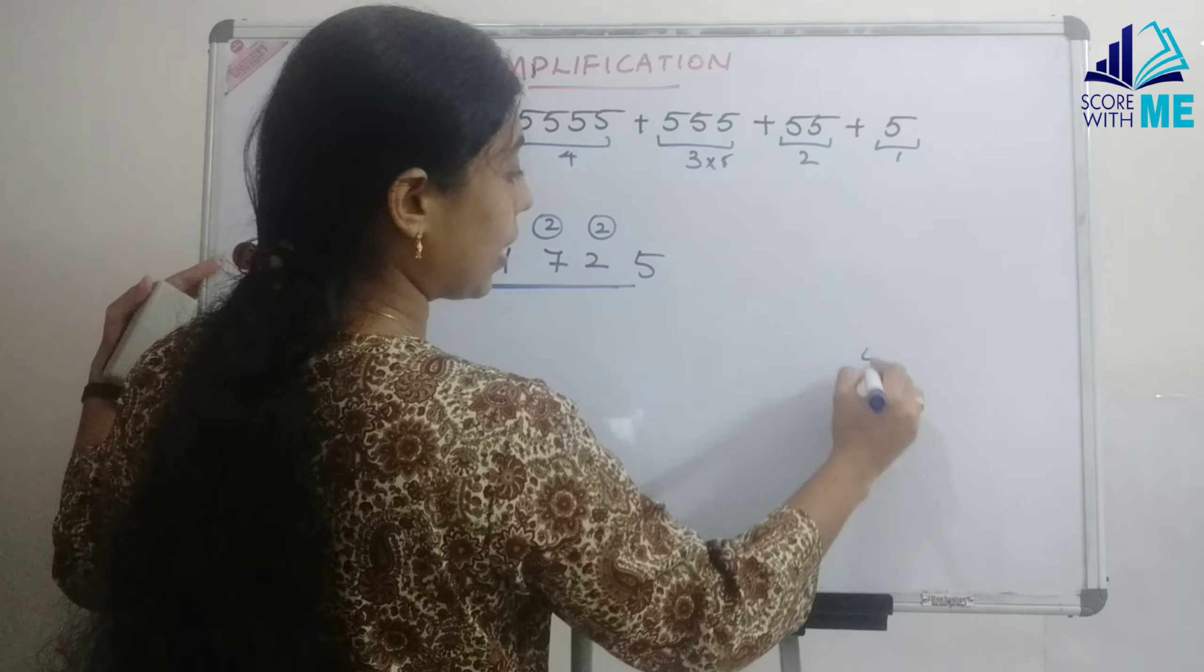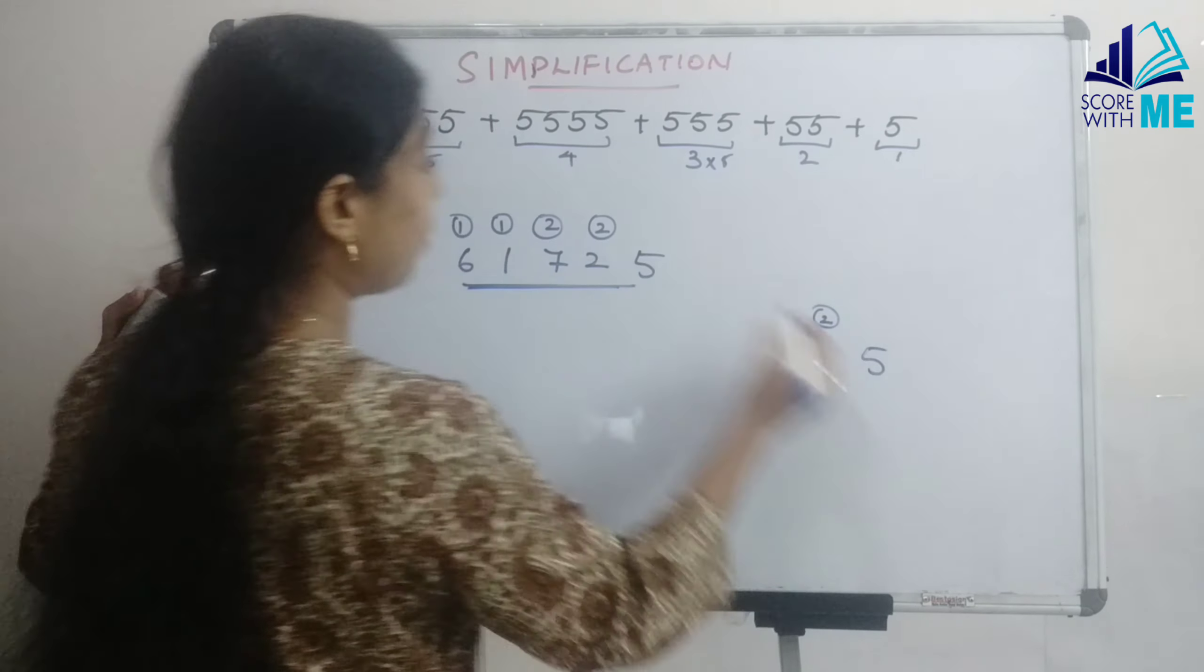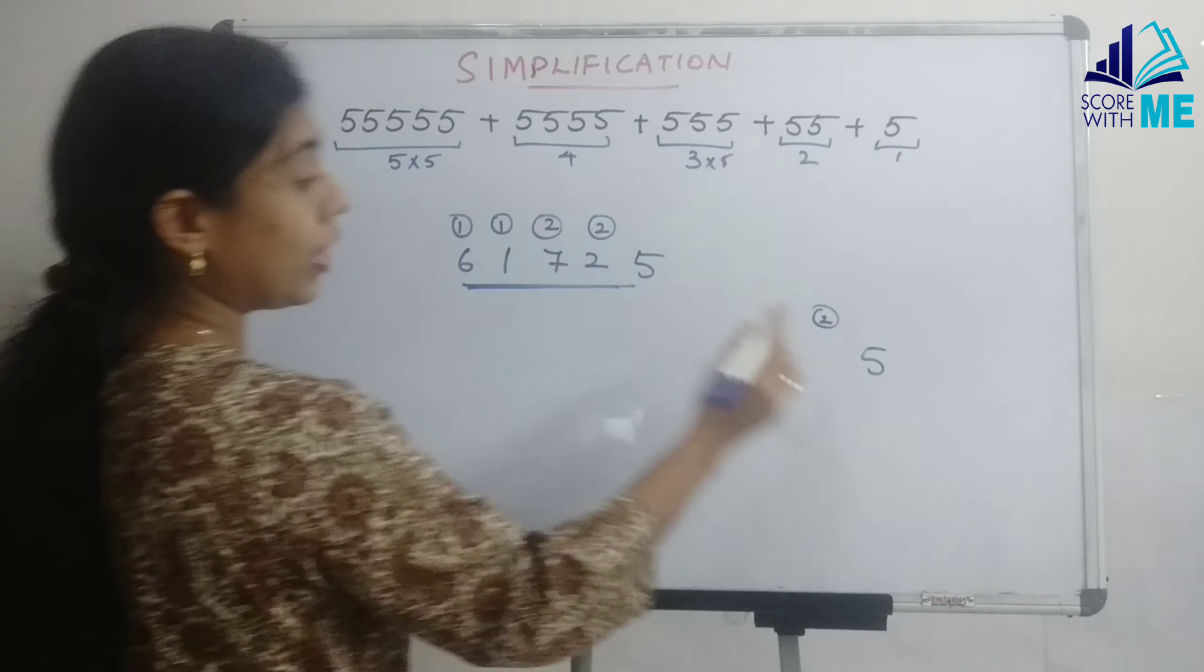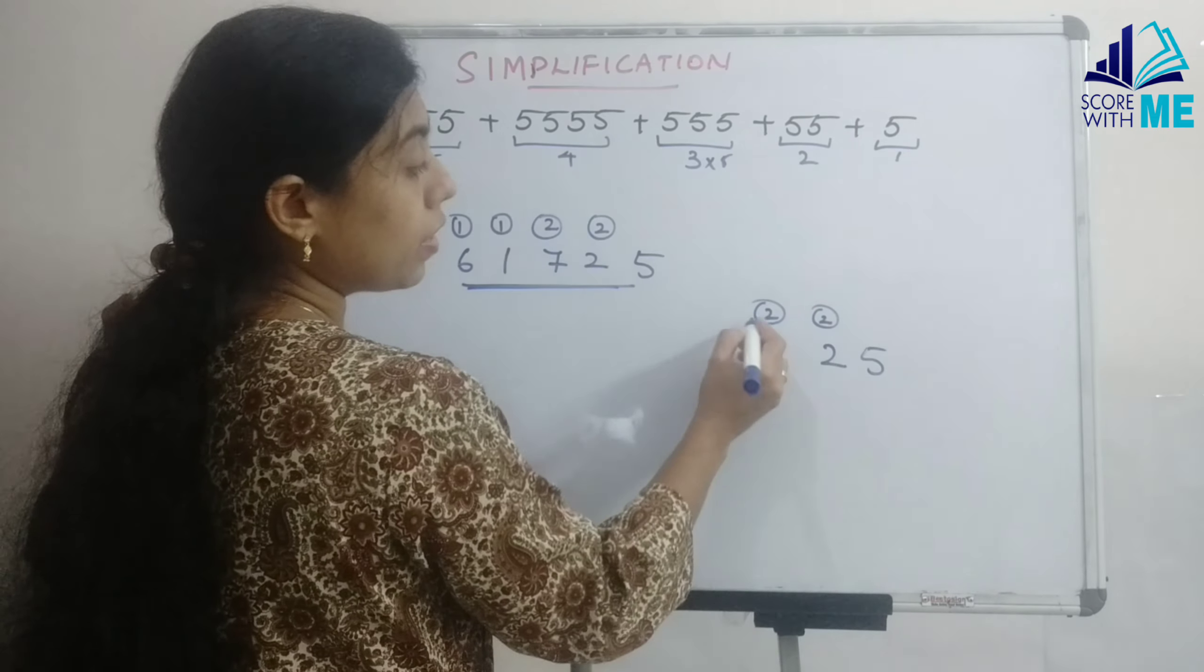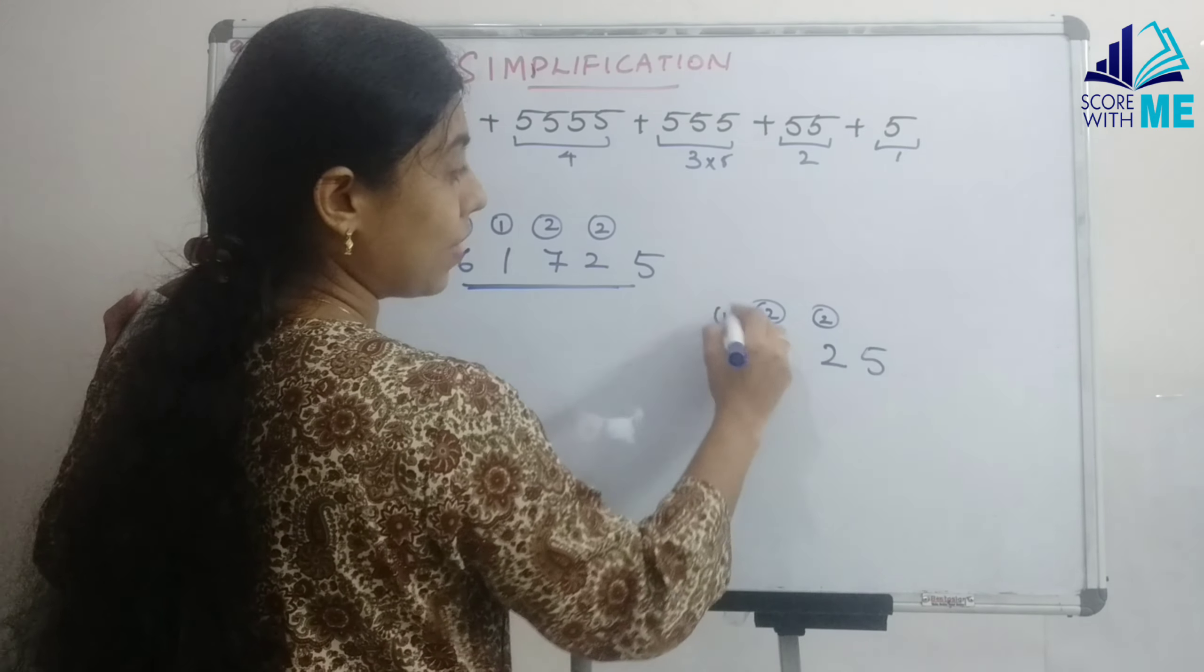I will write the product here once again. So the first number is 25. Next 4 into 5 will give you 20, the carry 2, so it becomes 22. 3 into 5 is 15, the carry 2, so the number becomes 17.